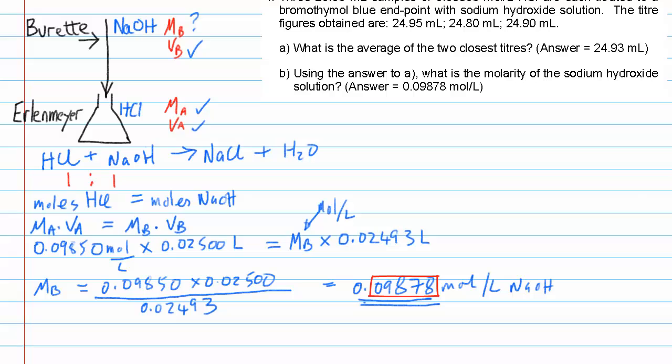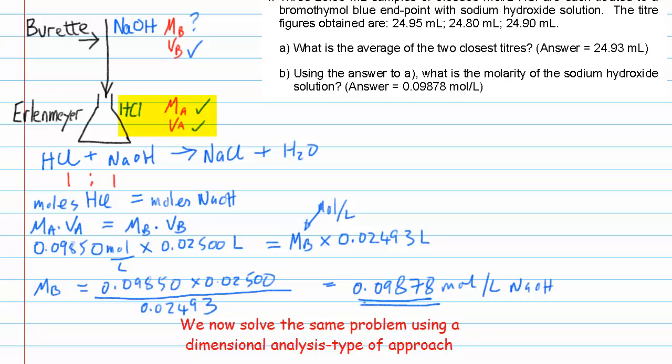That was an alternate method of doing the calculation. And now, seeing we've just got a little bit of time left, we'll take a quick look at the dimensional analysis type of approach. Remember, this is the approach which appears in the solutions in Appendix 2 of your lab manual. When using this type of approach, we should always, first of all, figure out, what can we calculate the number of moles of? Can we calculate the number of moles of the acid? Or can we calculate the number of moles of the base?